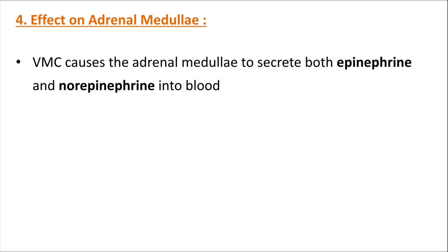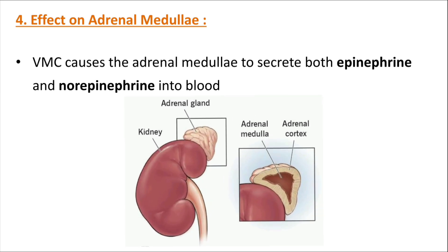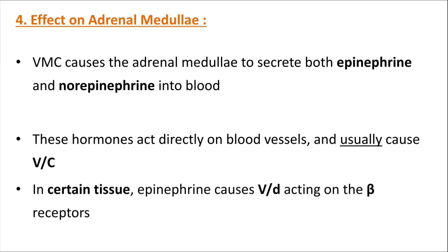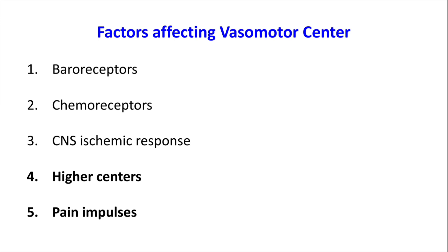The fourth function is the vasomotor center's effect on the adrenal medulla. The adrenal glands are located bilaterally on the superior poles of the kidneys. The vasomotor center causes the adrenal medulla to secrete epinephrine and norepinephrine into the blood. These hormones act directly on blood vessels and usually cause vasoconstriction. Acting on the heart, they increase heart rate — the same effect as sympathetic nerve supply. In certain tissues, epinephrine causes vasodilation by acting on beta receptors.